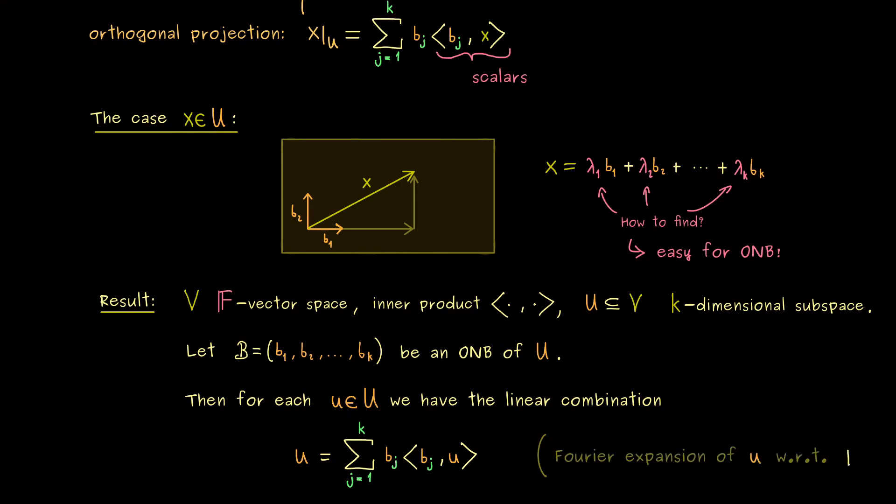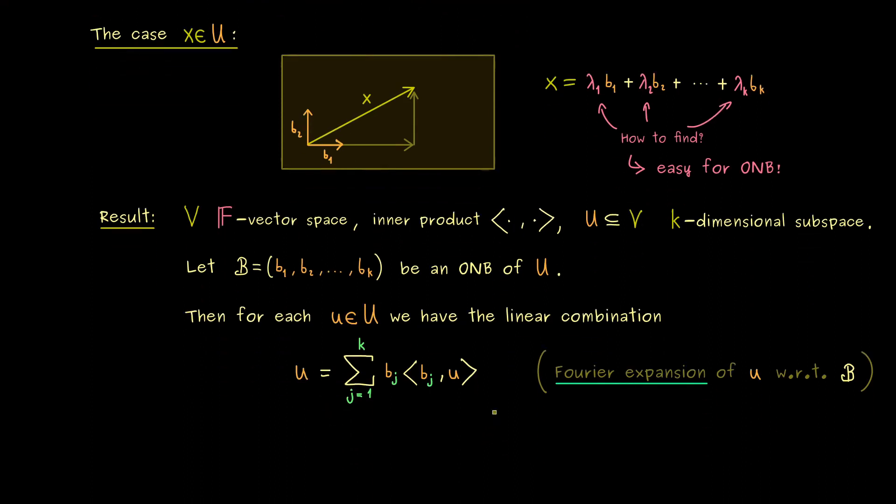And this is so nice that sometimes this linear combination gets a special name. It's called the Fourier expansion of u with respect to the orthonormal basis B. Often the name Fourier is used in a very special context, but it can also be used for this general formula. And in this case the scalars from the field F are called the Fourier coefficients. So please don't forget we either have real numbers or complex numbers.